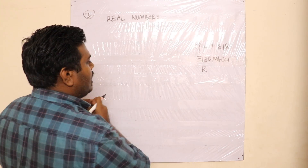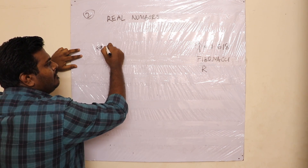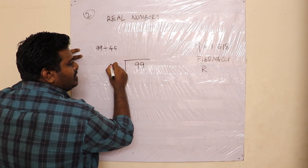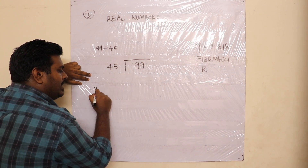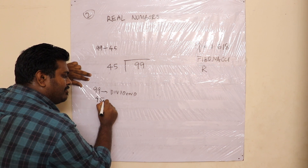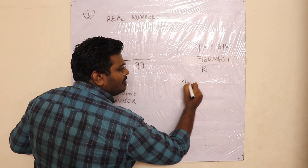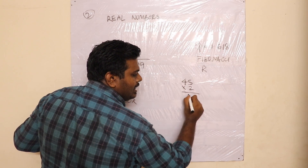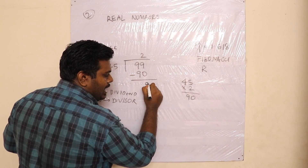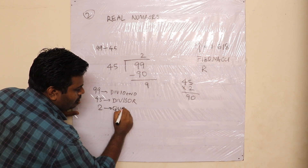Let's take a basic division example. Divide 99 by 45. We divide 45 into 99. 45 goes 2 times into 99, giving 90. The quotient is 2.